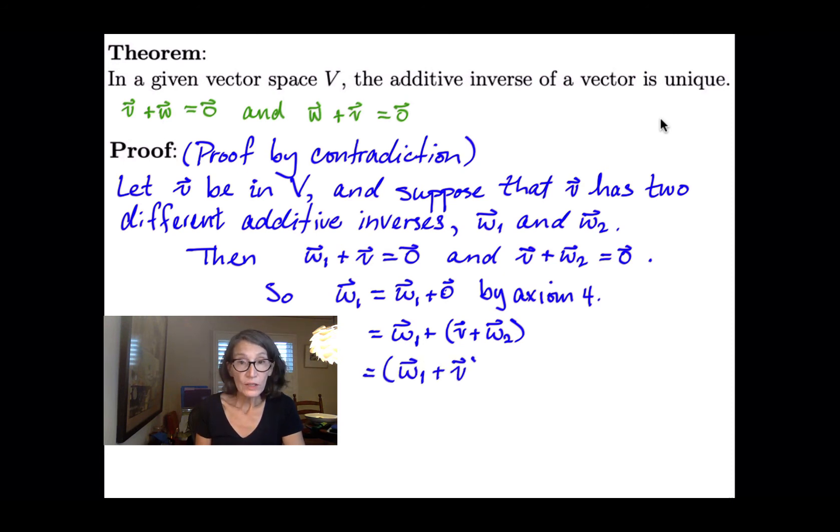And now we can rewrite this sum as w1 plus v plus w2, and that's the associativity property of vector addition or axiom 2.